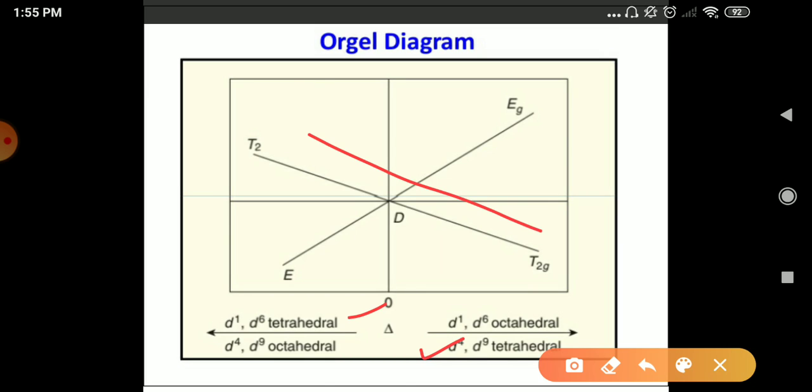You have to see in this way. So, for octahedral and tetrahedral, D1 and D6, the Orgel Diagram is same. And for D4 and D9, the octahedral of D4 and D9 is same for D1 and D6 tetrahedral.